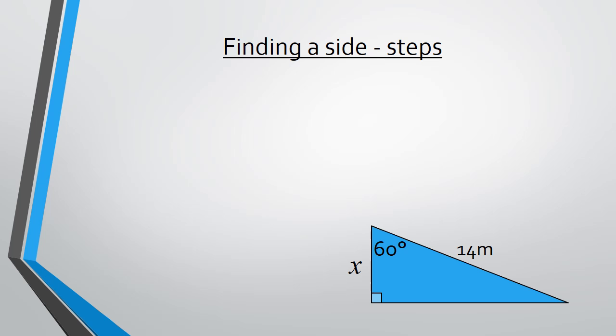So the steps that we need to take in order to find the length of a side are the following. Step 1, we're going to start by scribbling off the side with no information written on it. There we go, scribble it out.